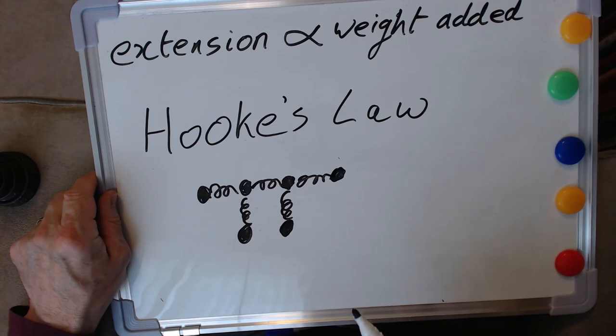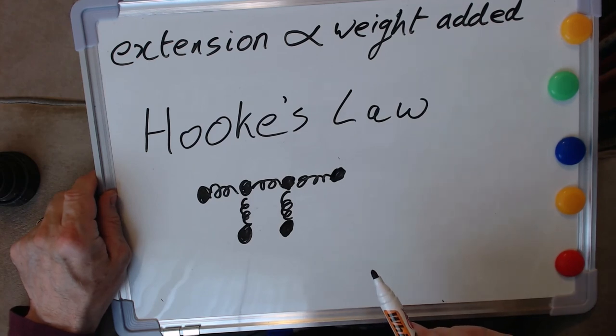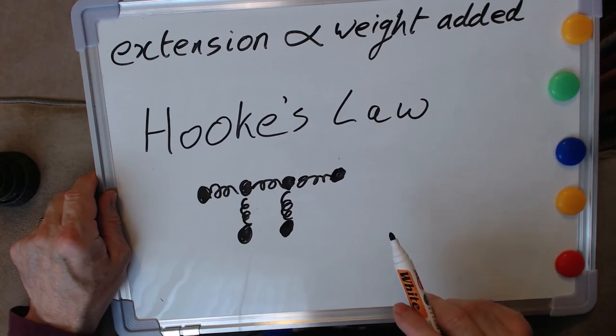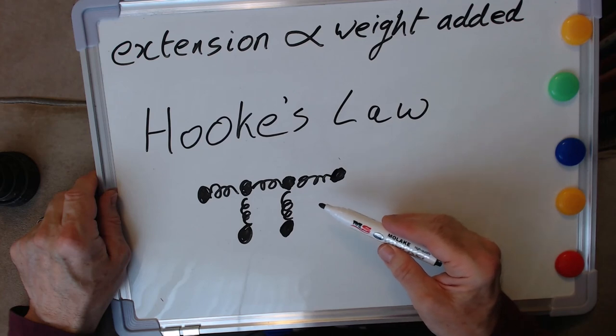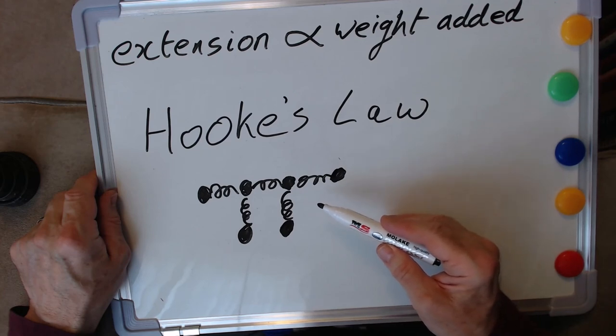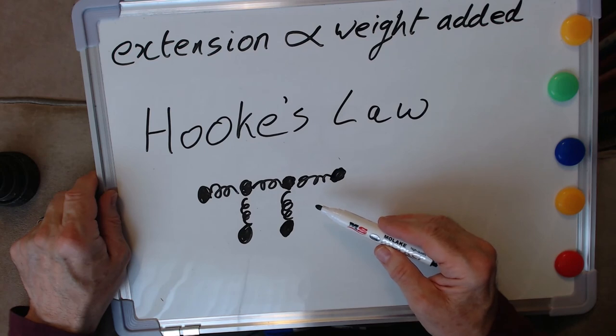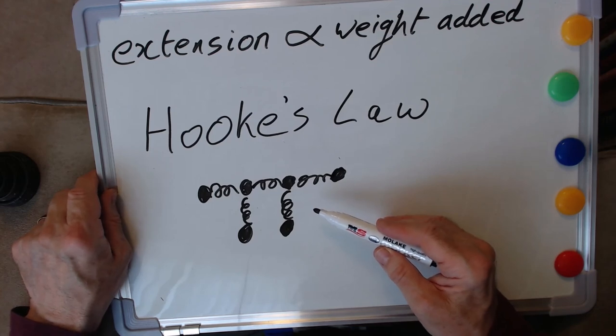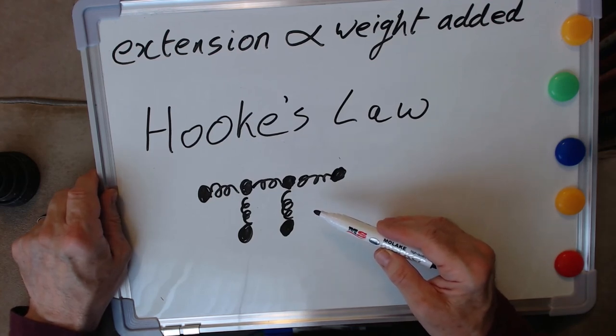By stretching a rubber band or stretching and squashing a spring, what we've demonstrated in principle is what the forces between the atoms comprising that material behave like. So we've looked at interatomic and intermolecular forces using an elastic band. We'll see you next time, bye for now.